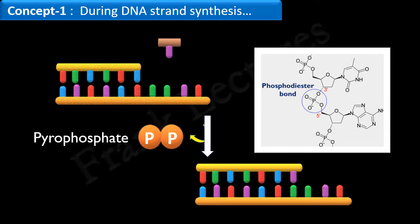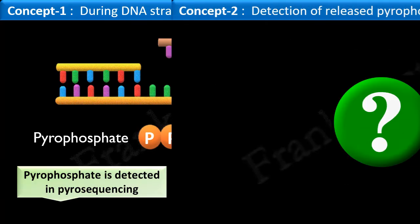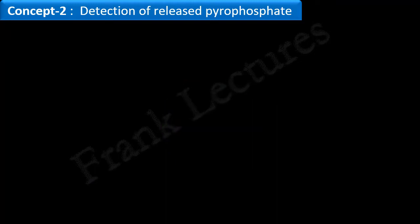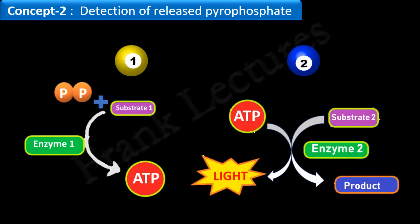This pyrophosphate is detected in Pyrosequencing and forms the basis for the determination of the DNA sequence of the template strand. The pyrophosphate is detected by an enzyme cascade reaction that results in the emission of light. The emission of light confirms that a pyrophosphate has been released.